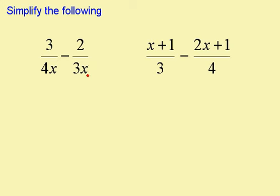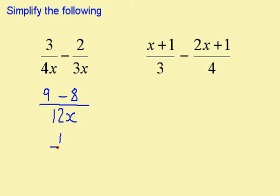For this question, I can see that my common denominator is going to be 12x. 4x goes into 12x three times, so 3 times 3 is 9. 3x goes into 12x four times; 4 times 2 is 8. I've got 9 minus 8 over 12x, which is 1 over 12x.